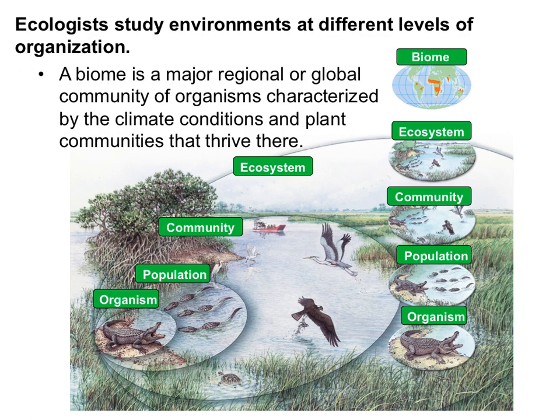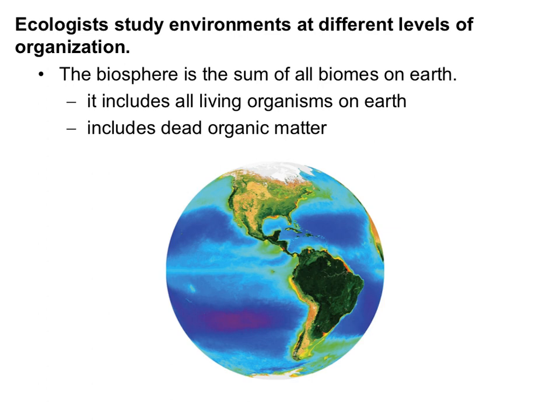Moving out from ecosystem, we have biome. It is a major regional or global community of organisms characterized by the climate conditions and plant communities that thrive there. Biomes are more general areas with common types throughout the world — examples include aquatic, desert, tundra, and forest. Moving out all the way, we get to the biosphere, which is the sum of all biomes on Earth. This includes all living organisms on Earth as well as any dead organic matter — our biosphere is the planet Earth.